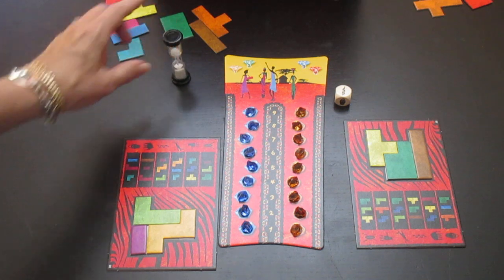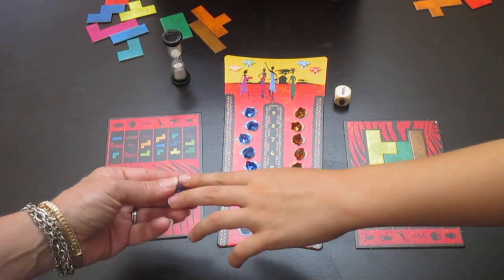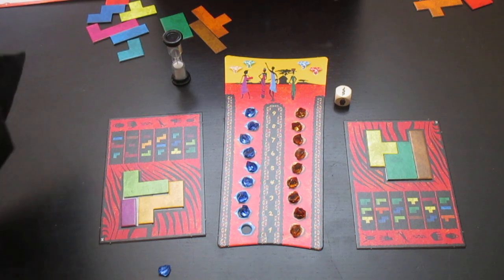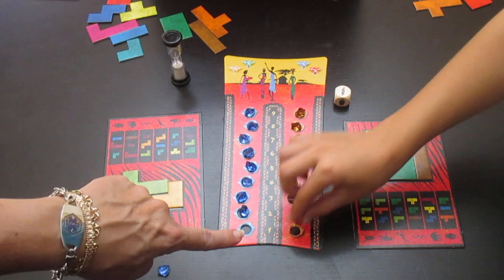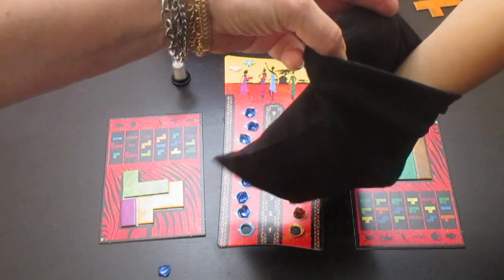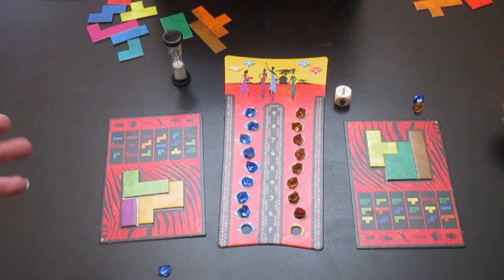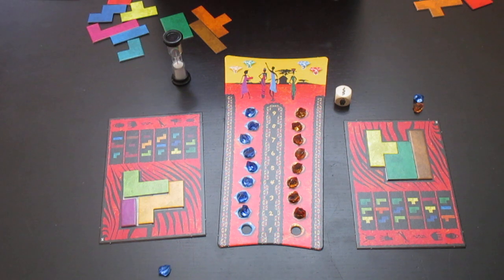So the first player that called Ubongo will take a sapphire from the sapphire side and will take a stone from the bag. The player who is second will take a stone from the amber side and then also gets to take a stone from the bag. Any player after that that completed in the time frame gets to pull a stone from the bag.